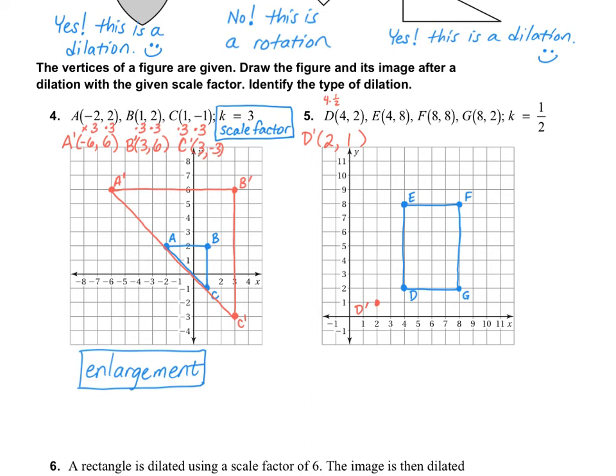Okay, let's take a look at E prime. So E prime is going to be half of 4. Half of 4 is 2. And then half of 8. Half of 8 is 4. So E prime will be at 2,4, which is here on your graph.